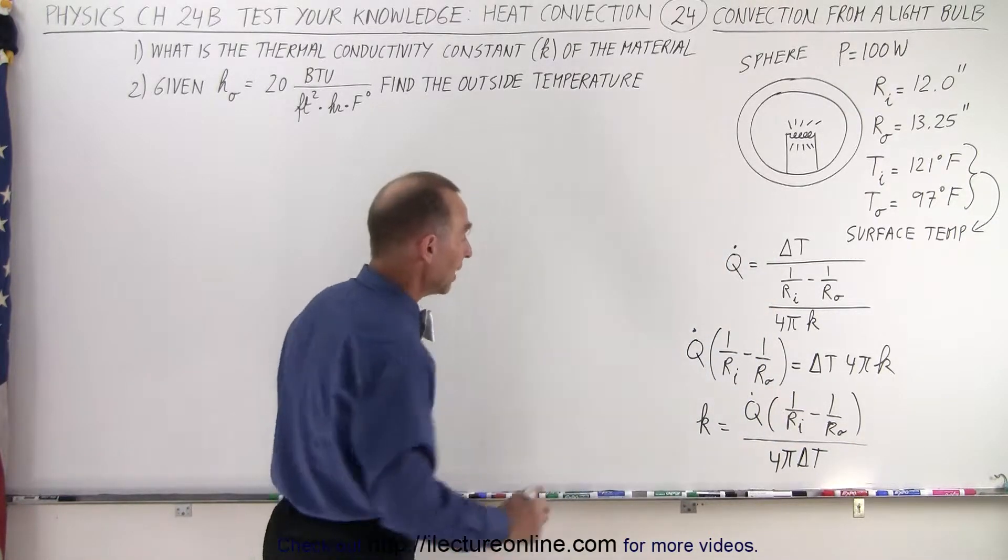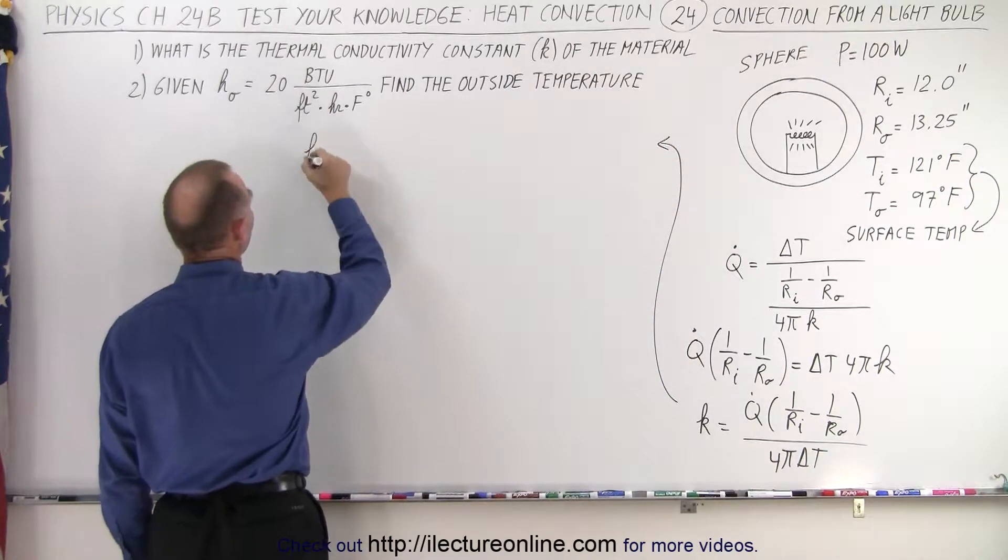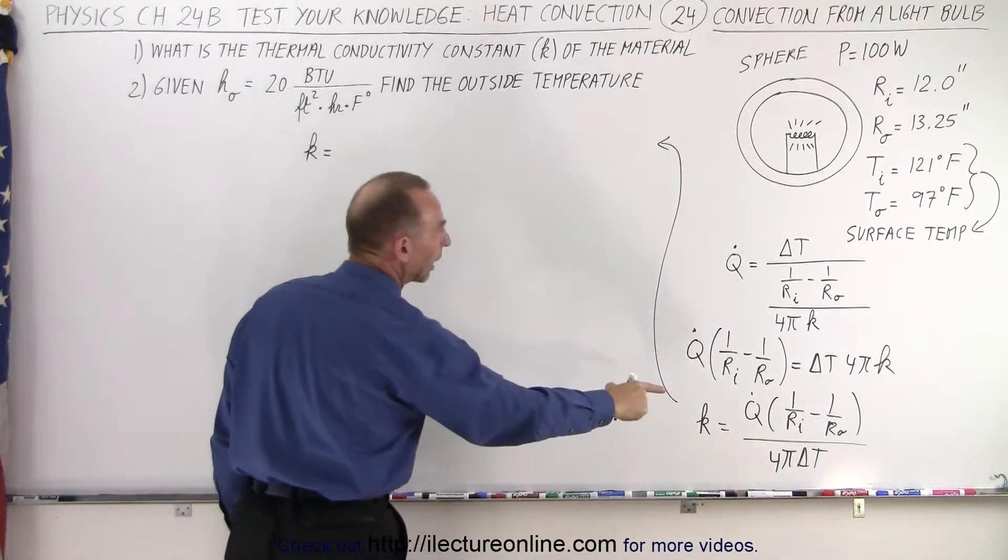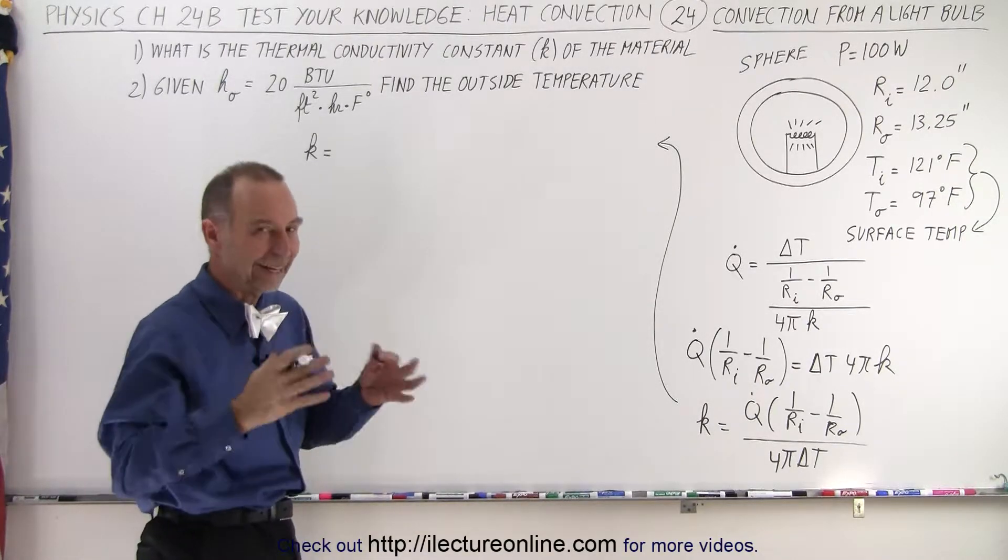All right, now we're ready to solve for K. We'll need to make some conversions in just a moment. So first of all, K is equal to Q dot, the amount of heat, assuming that's going to be the 100 watts if we're in a steady state condition.